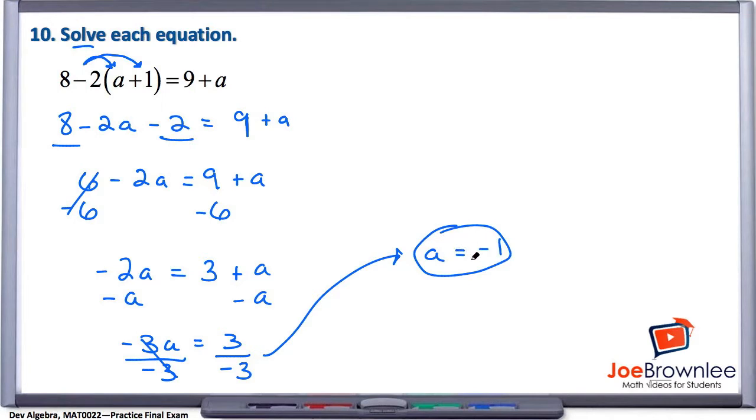And so there we have it, number 10, a equals negative 1. Don't forget, if you're working with an equation and you're solving for a variable, you can plug this variable back into the original equation to check yourself. So let's check ourselves to see if a is in fact equal to negative 1.